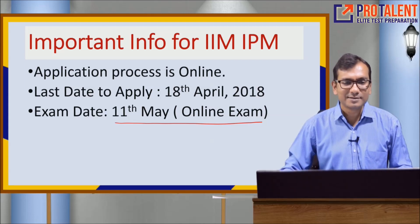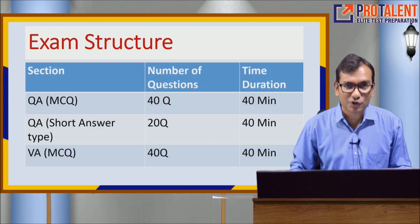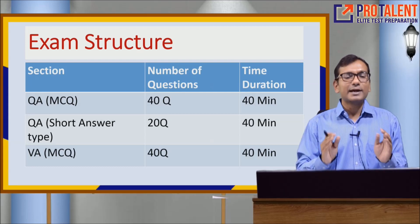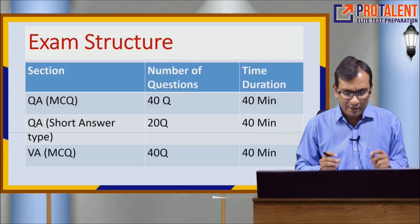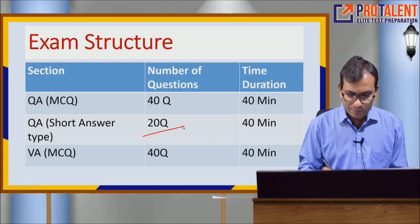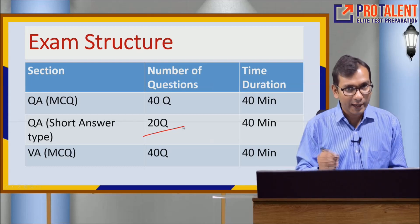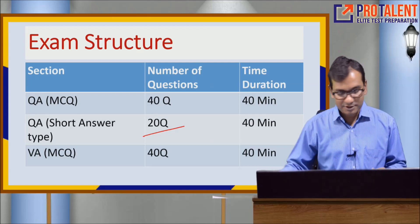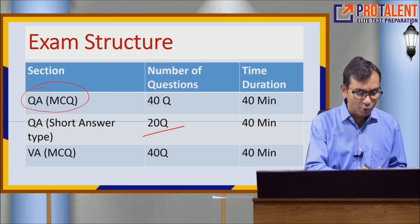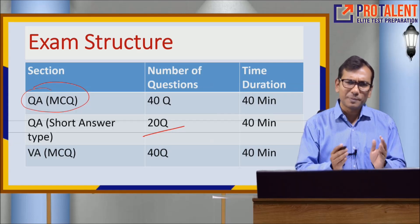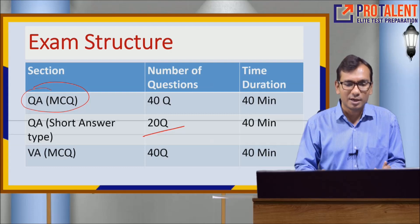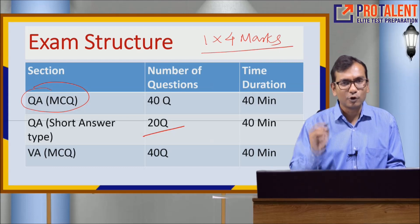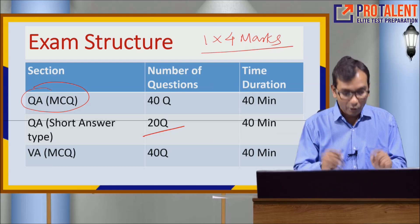One very important part is the exam structure — this is the big change. Shanti se samjhiye kya change hai exam structure mein. Jo pehle 60 questions maths ke hua karte the, woh abhi bhi hain, but these 60 questions are now divided into two parts. The first part is MCQ, which is normal — jo pehle hota tha wahi hai, koi change nahi. Each MCQ question carries four marks.